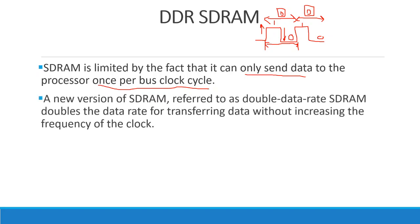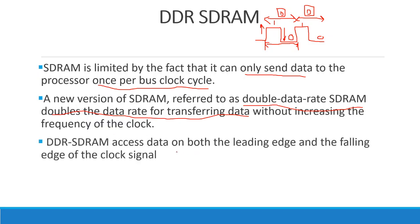The newer version of SDRAM is called Double Data Rate SDRAM (DDR SDRAM). It doubles the data transfer rate without increasing the clock frequency. It accesses data on both the leading edge and the falling edge of the clock signal — so one clock signal gives two data transfers.